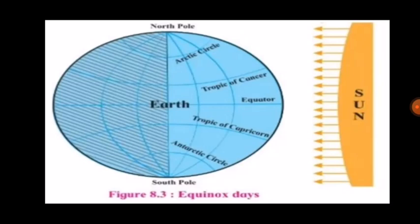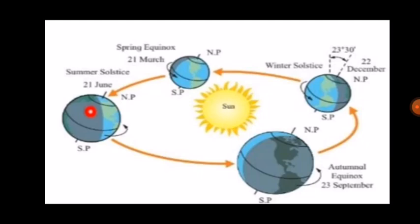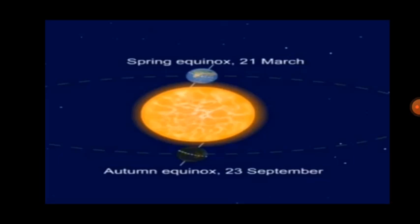On equinox, the sun rays are perpendicular on the equator, and the circle of illumination coincides with the great circle defined by two opposite meridians. In the northern hemisphere, spring prevails from 21st March to 21st June, while autumn prevails from 23rd September to 22nd December. The southern hemisphere has the opposite seasons. 21st March is called the spring or vernal equinox, whereas 23rd September is called the autumnal equinox. The equinox or solstice date can vary by a day or so.